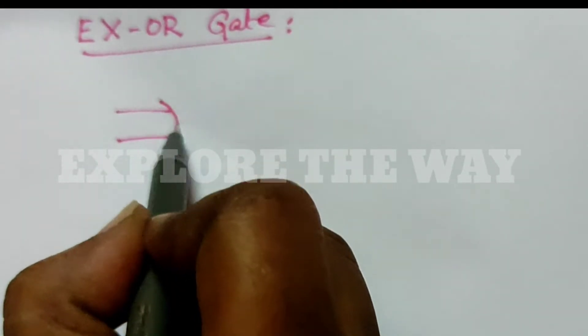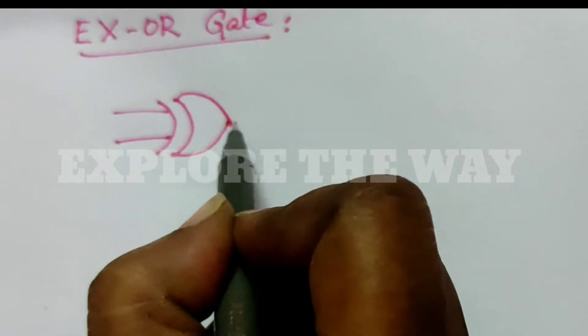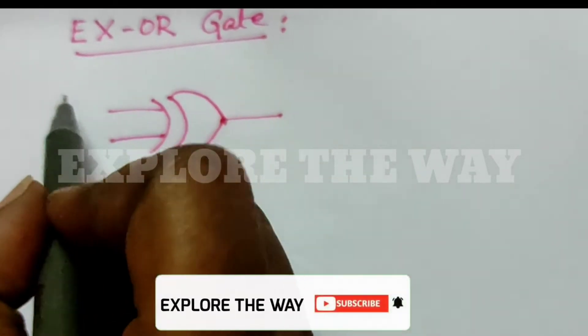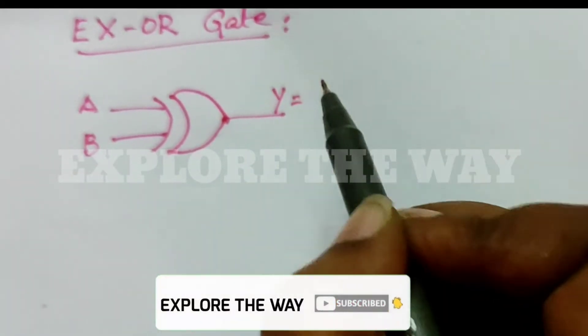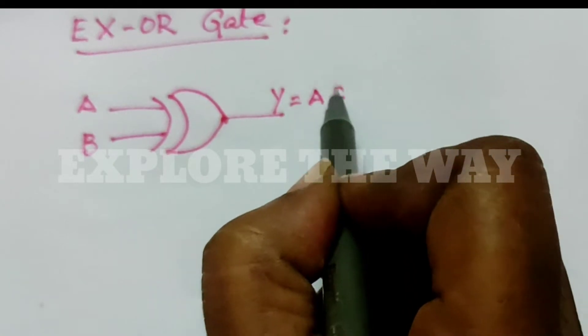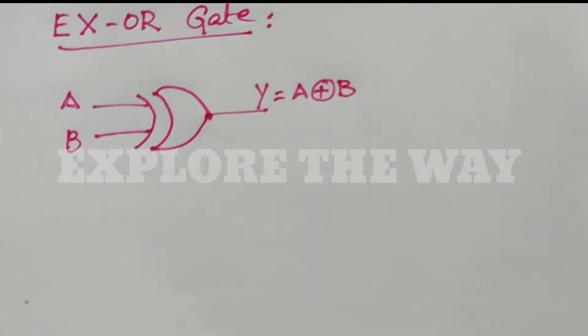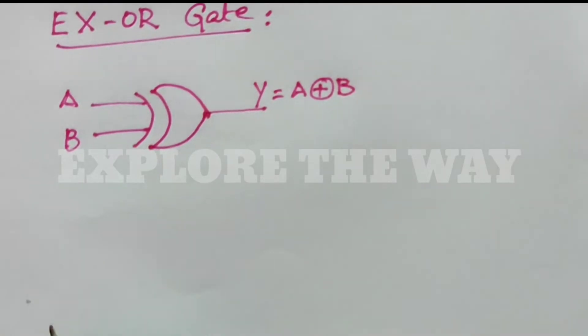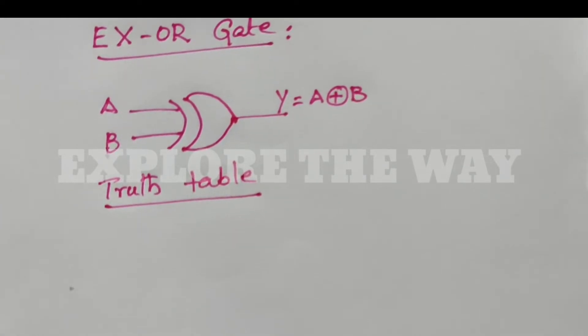This is the symbol of an XOR gate. It has two inputs A and B, and one output Y, which is equal to A XOR B. The functionality of an XOR gate or any logic circuit can be described using a truth table.